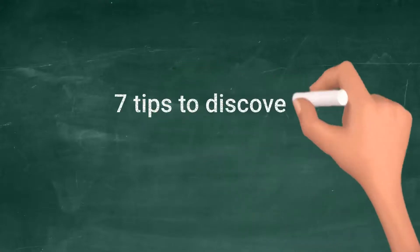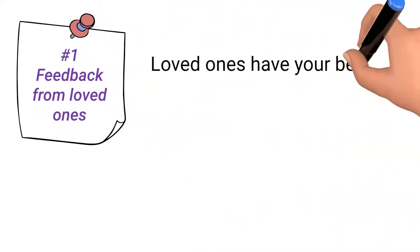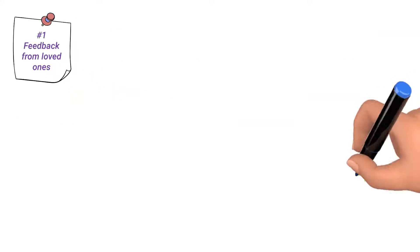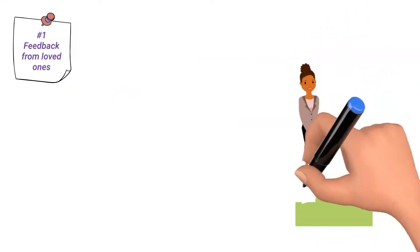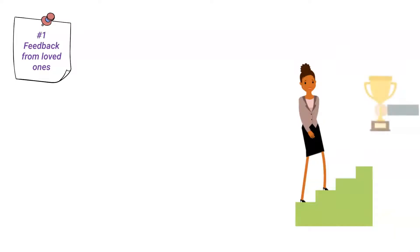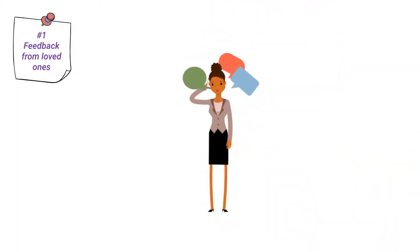Here are 7 tips to discover your purpose in life. Number 1: Feedback from loved ones. Loved ones have your best interests at heart. They want to see you succeed and be happy. They know you and can help you identify your strengths, which may be an indication of your life vision. Share what you are doing with a loved one who will be supportive and ask for their feedback.